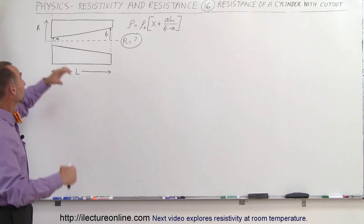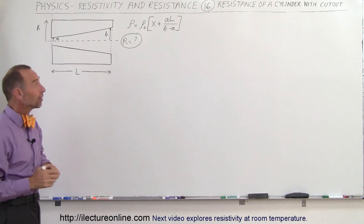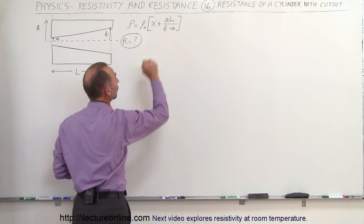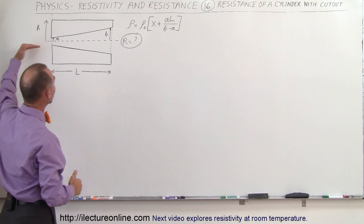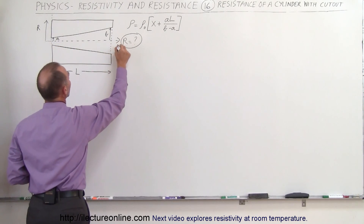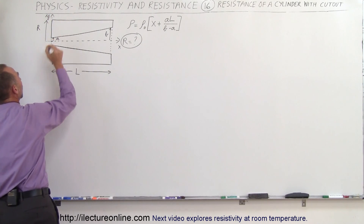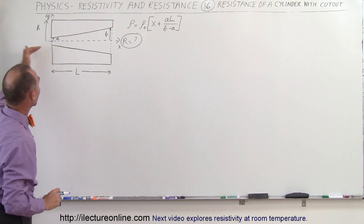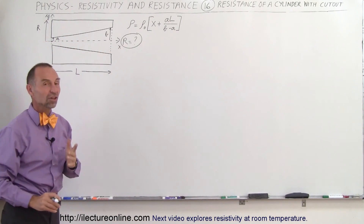The radius of the whole cylinder is R, and the length of the cylinder is L. On top of that, the resistivity is not constant — it's equal to X plus AL over B minus A, where X is the variable in the length direction. We'll put the origin here to make it easier to work with, so X is any position along the length direction.